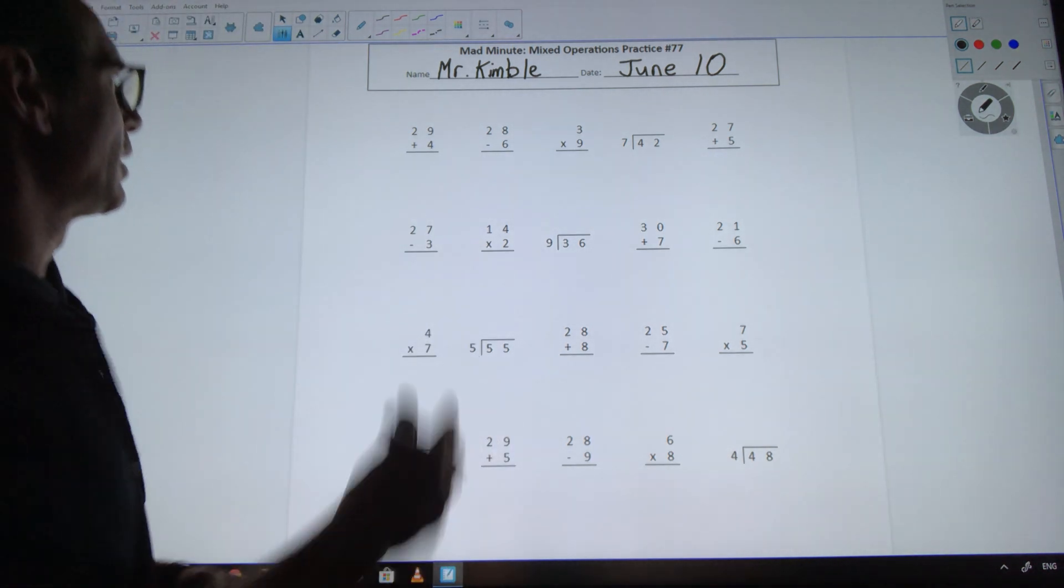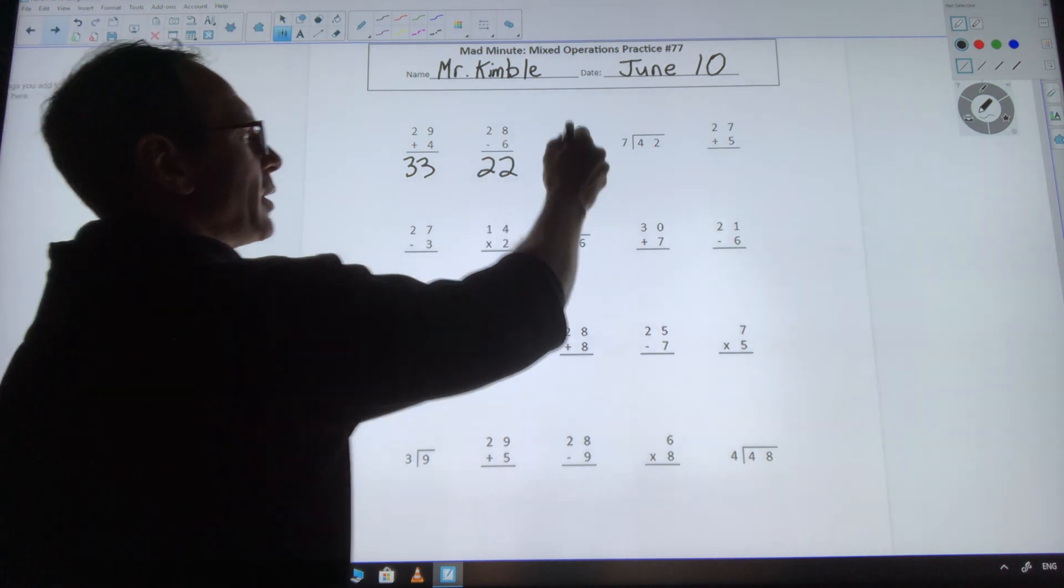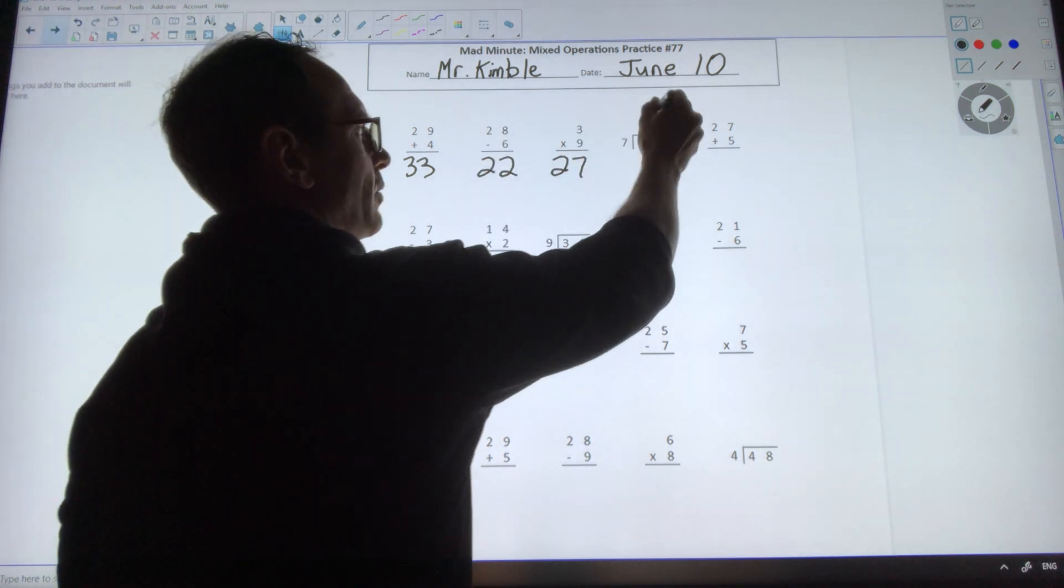Ready, go! 29 plus 4 is 33. 28 minus 6 is 22. 3 times 9 is 27. 42 divided by 7 is 6.